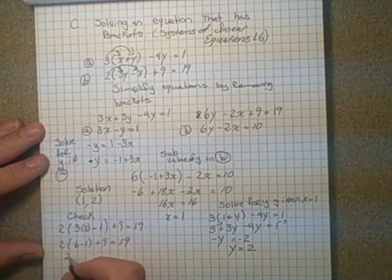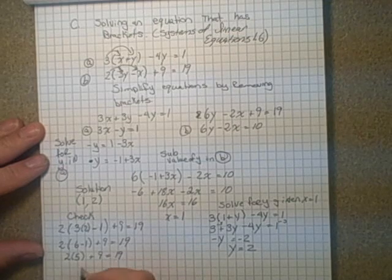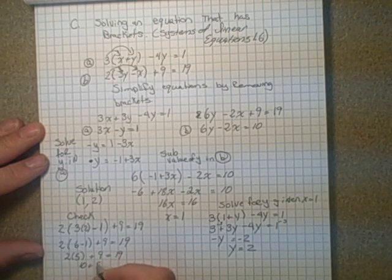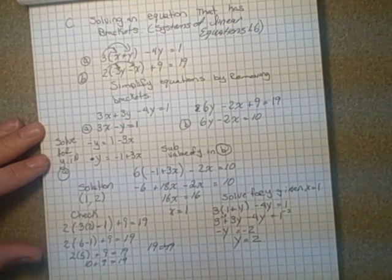2 times 6 minus 1 plus 9 equals 19. And that would be 2 times 5 plus 9 equals 19. So this would be 10 plus 9 equals 19. So 19 equals 19. And we have it.